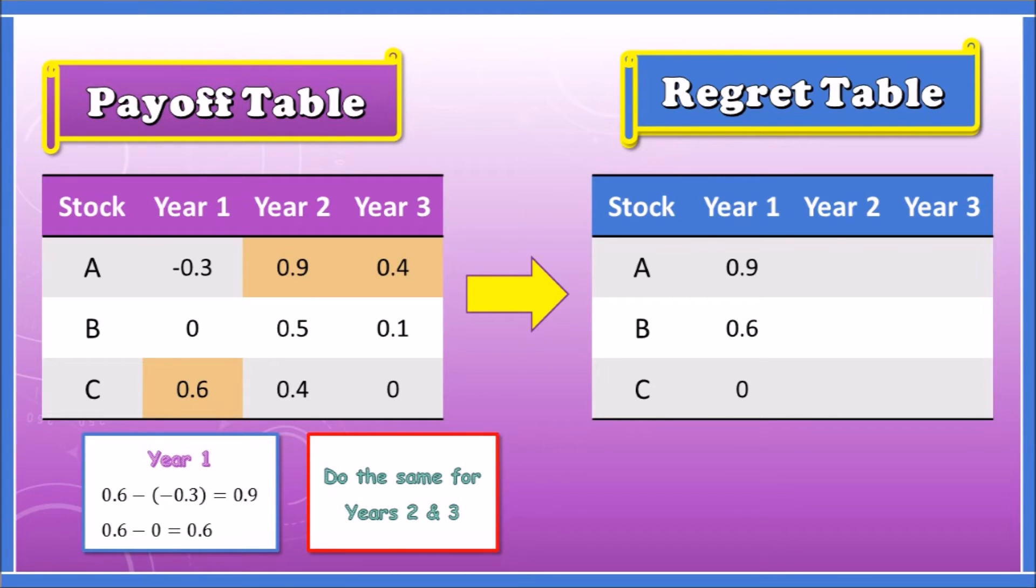Now let's repeat the same thing for Year 2 and Year 3. The highest values were 0.9 and 0.4. Subtracting 0.9 across all Year 2 values and 0.4 across all Year 3 values, we should yield these. You can see 0.9 minus 0.5 is 0.4, and 0.9 minus 0.4 is 0.5 in Year 2.